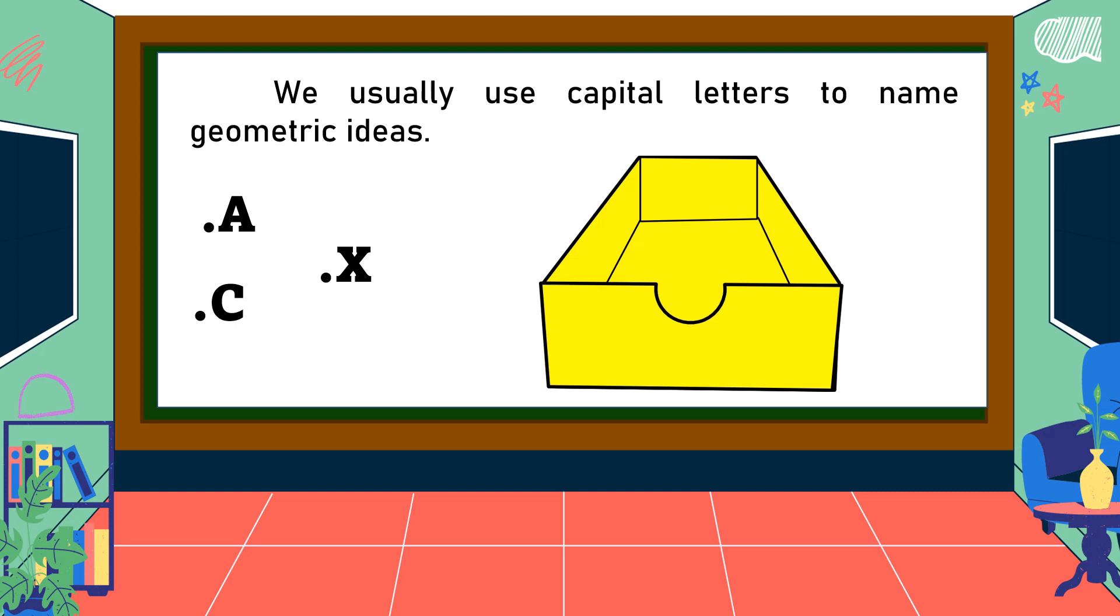In naming the point, we can use any letter in our English alphabet. So let's name the points that can be seen in this figure: point A, point B, point C, point D, point E, point F, point G, and point H.